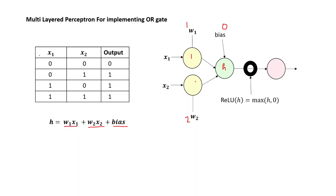Let us take the first case where X1 is zero and X2 is zero. Therefore, W1 times X1 will be zero, W2 times X2 will be zero, and the bias is zero. So the value of H will be zero. We feed into the ReLU function — ReLU of zero will be equals to maximum of zero and zero — and therefore your output layer will output the value of zero.